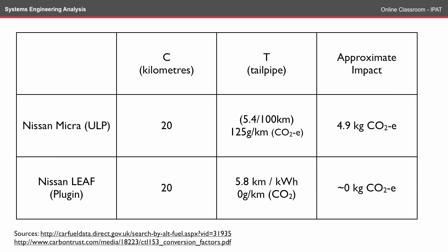If we compare two different cars — an unleaded Nissan Micra and the plug-in Nissan Leaf — we leave our kilometres as the same trip length. We look at the tailpipe emissions as our measure for T. The Nissan Micra uses 5.4 litres per 100 kilometres, which can be converted to a carbon dioxide equivalent of 125 grams per kilometre.